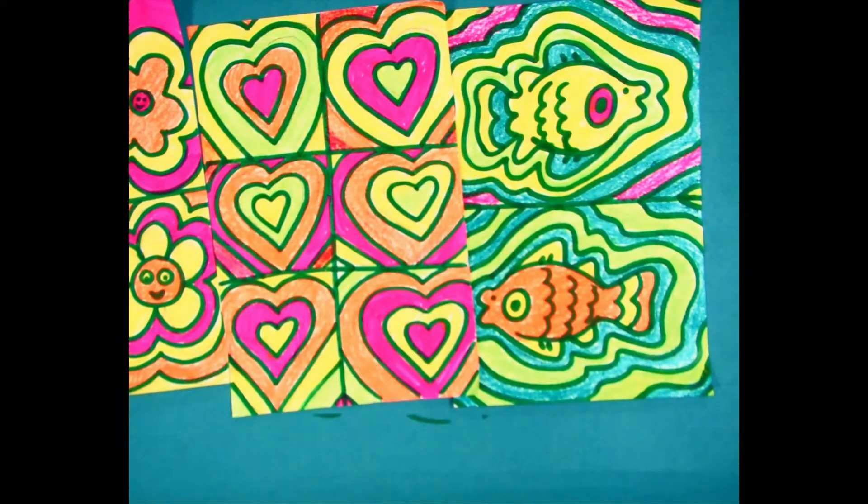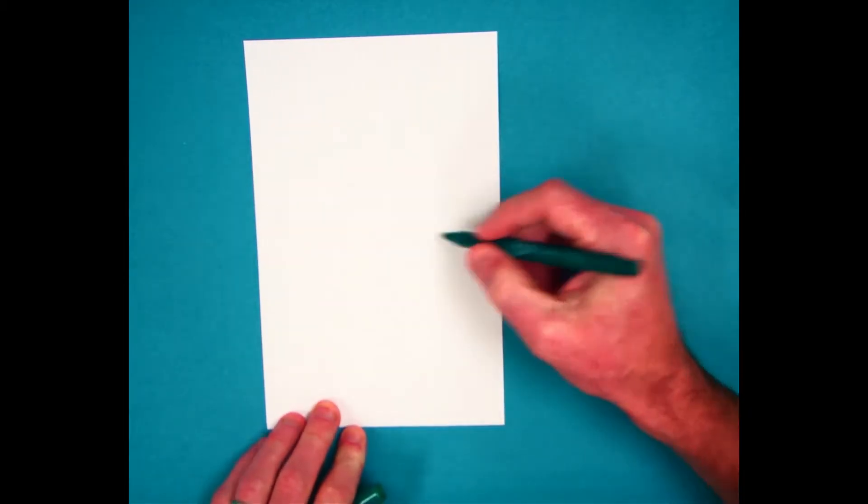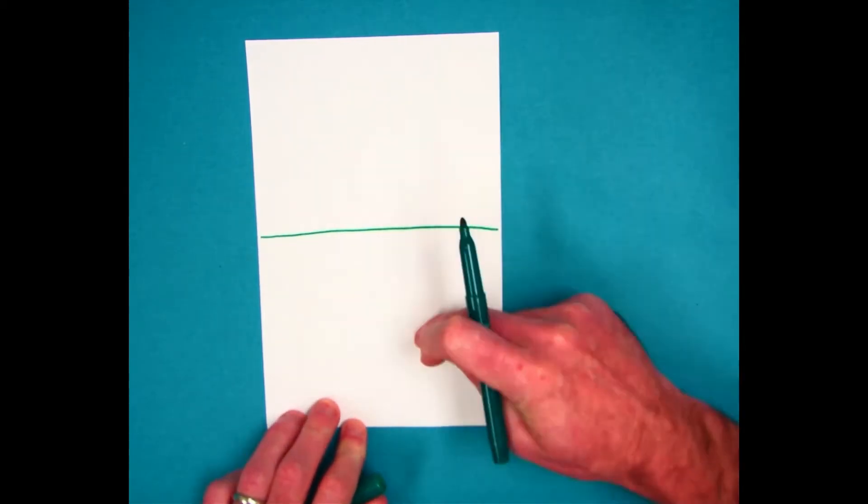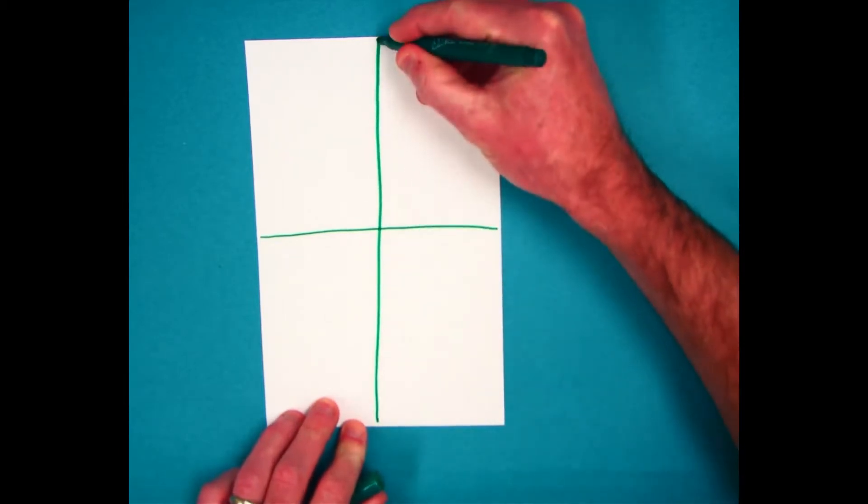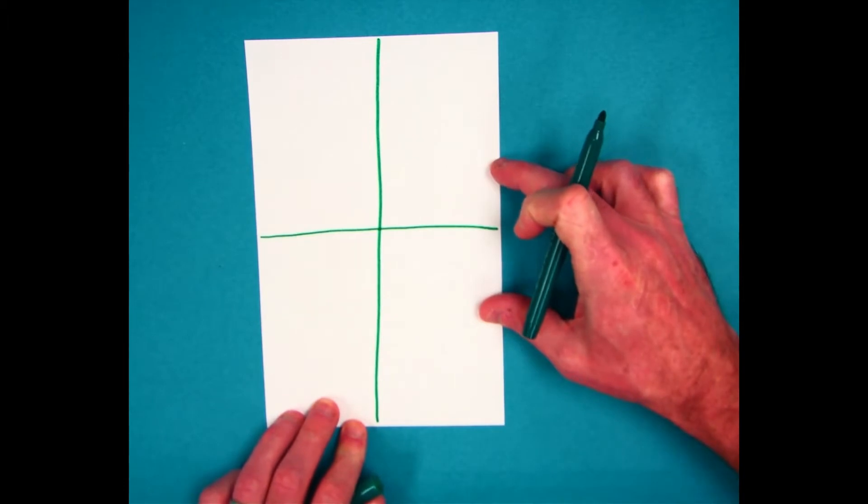Okay, let's get to the video. To start one of these I would decide if I'm going to divide my paper, whether it is into two sections like this, or four sections like this, or even six sections by putting two lines right here.